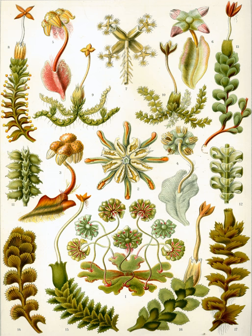It is estimated that there are about 9,000 species of liverworts. Some of the more familiar species grow as a flattened leafless thallus, but most species are leafy with a form very much like a flattened moss. Leafy species can be distinguished from the apparently similar mosses on the basis of a number of features, including their single-celled rhizoids.